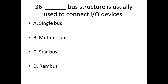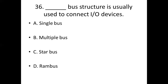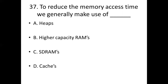Thirty-sixth bit: Dash bus structure is usually used to connect I/O devices. Option A: Single bus. Option B: Multi bus. Option C: Star bus. Option D: RAM bus. Answer: Option A, Single bus.